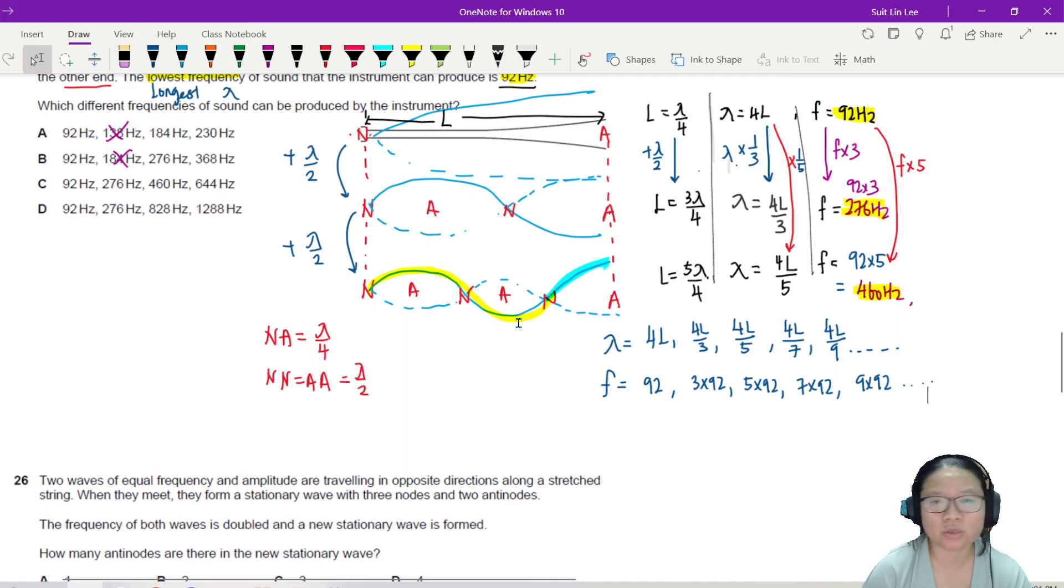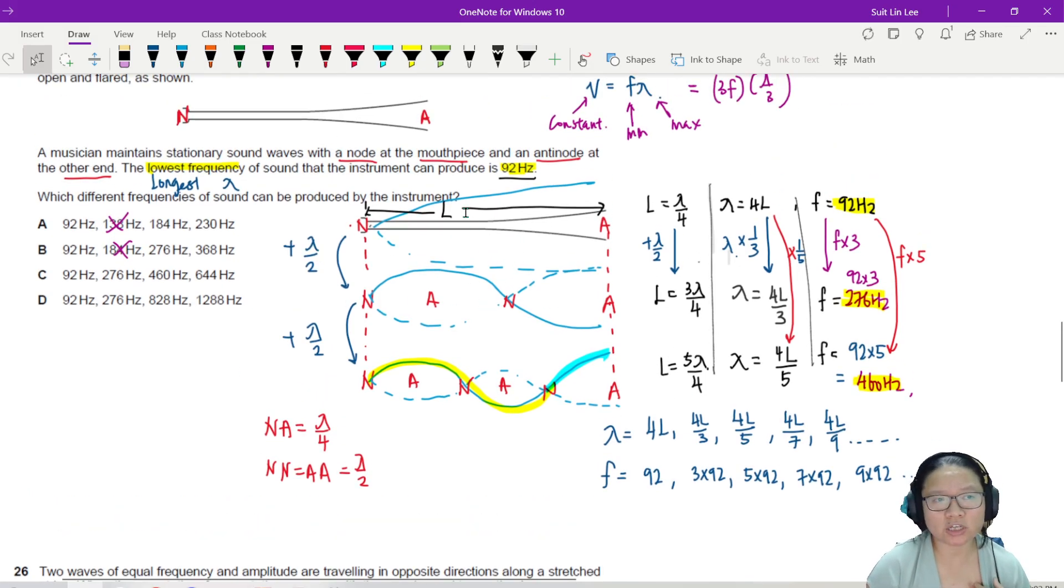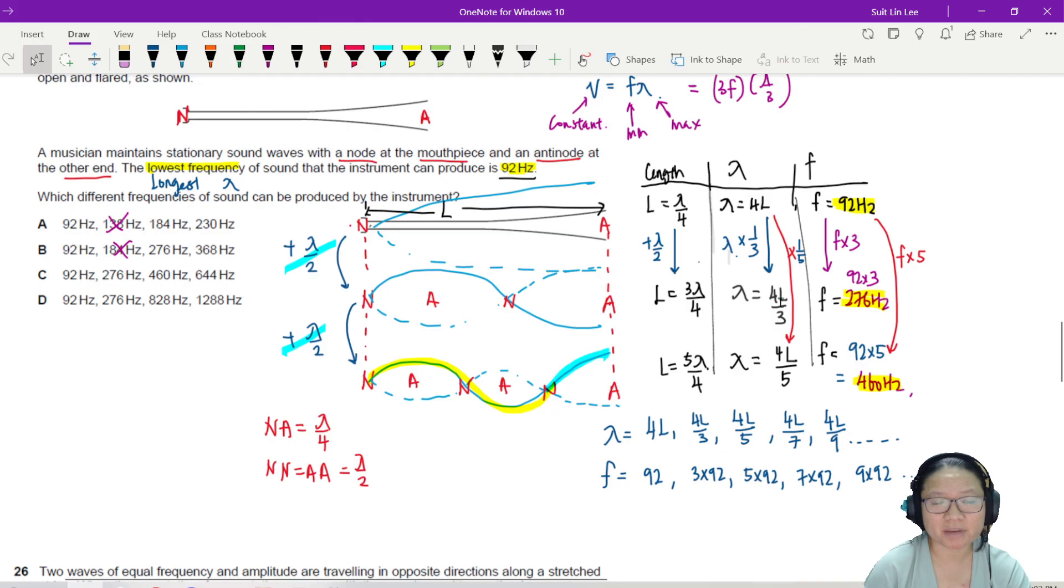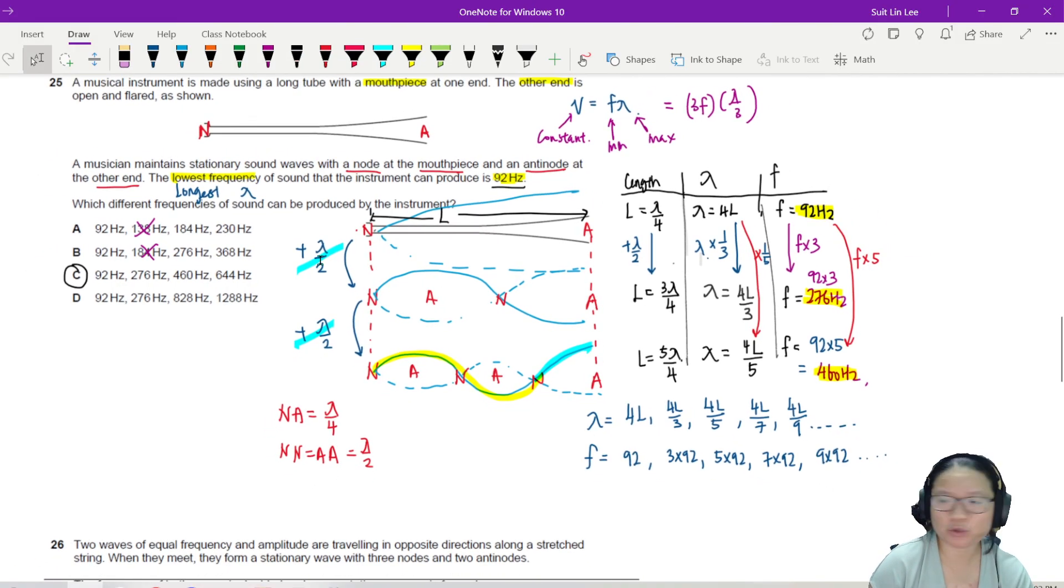So my recommendation is either you already do enough questions that you know the pattern. For example, I know that this is odd. Odd harmonics. So all the odd frequency, you will get a loud sound. But if you cannot, then slowly draw. Start with the first one. Normally, they will always start with the longest wavelength because that's the simplest one. The 1N, 1A. And then you just keep adding lambda over 2. You add lambda over 2. You add lambda over 2. Draw out the relationship between the length of the instrument or the string with the wavelength lambda, with frequency. Because whatever happens to lambda, the inverse will happen to frequency. Lambda divided by 3, frequency will times 3. So that would leave my answer to be C. Stationary wave, we need to practice so that you're familiar with the pattern.